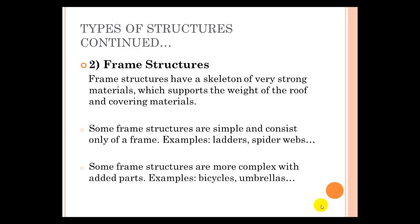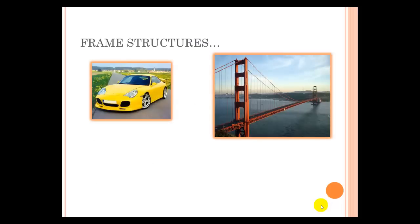Other types of frame structures are more complicated, and have added parts, such as other simple machines like gears. These include things like bicycles and umbrellas.